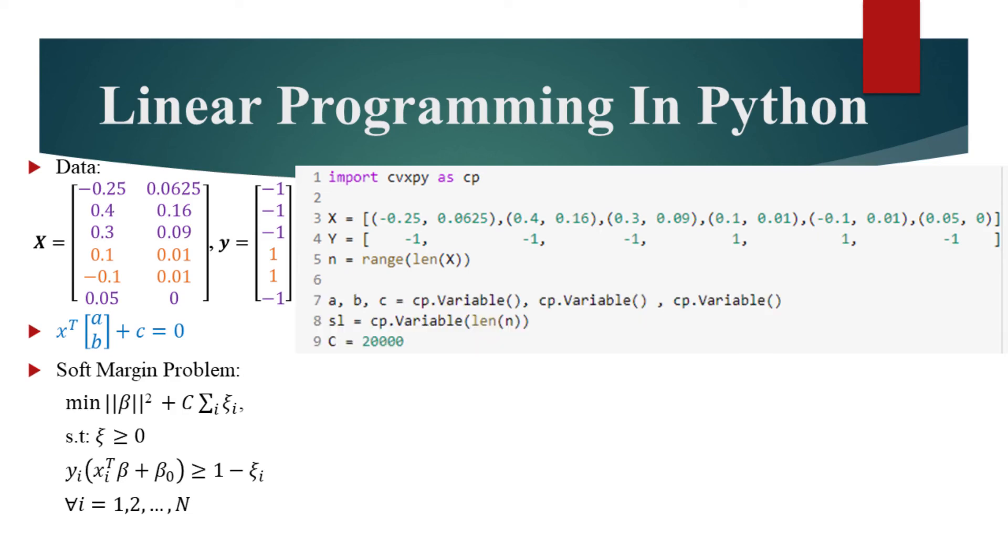Then we define the variables for optimization. A, b, and c correspond to the variables for the hyperplane on the left in blue. Sl corresponds to the slack variables, and we also define c equal to 20,000.